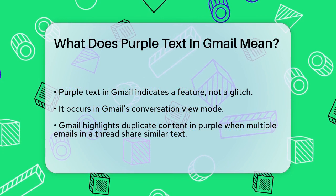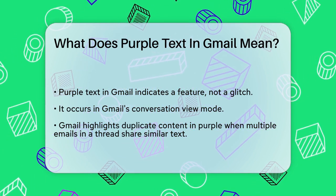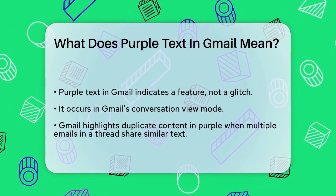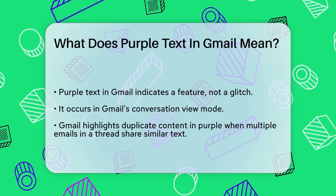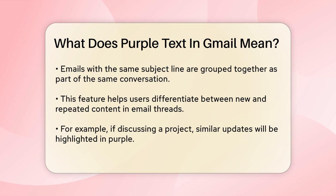When Gmail detects that multiple emails in a thread have similar content, it highlights the duplicate parts in purple. This happens because Gmail groups emails with the same subject line together, assuming they are part of the same conversation. For example, if you're having an email exchange with someone and you both send multiple messages with similar text, Gmail will highlight the repeated parts in purple.